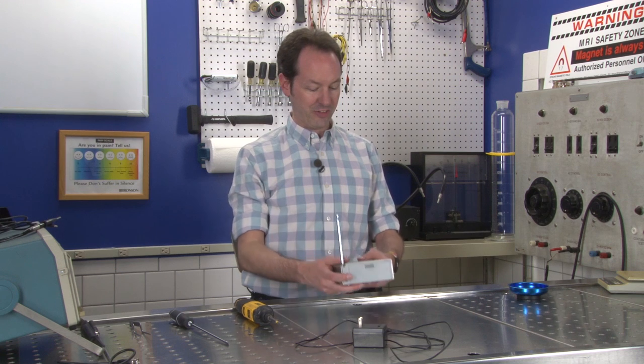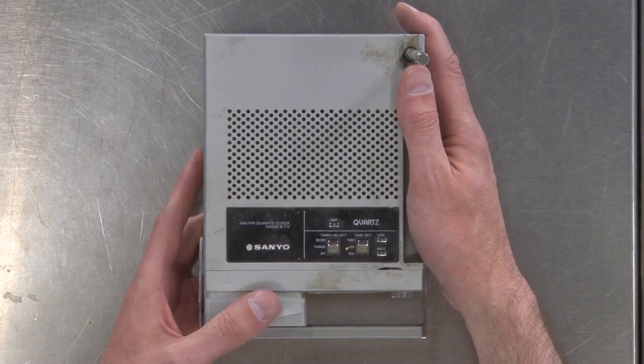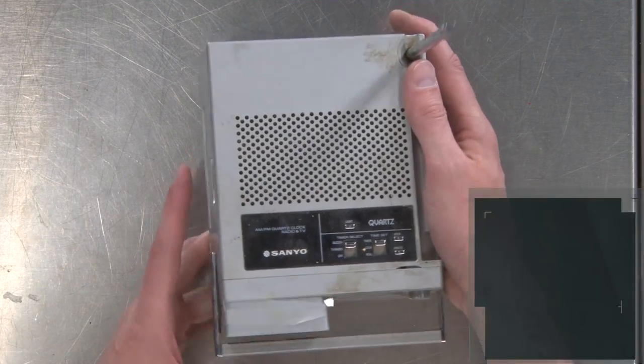So we've got a Sanyo AM, FM, quartz, clock radio and TV. They're proud that it's a quartz clock. That tells you how old this is.